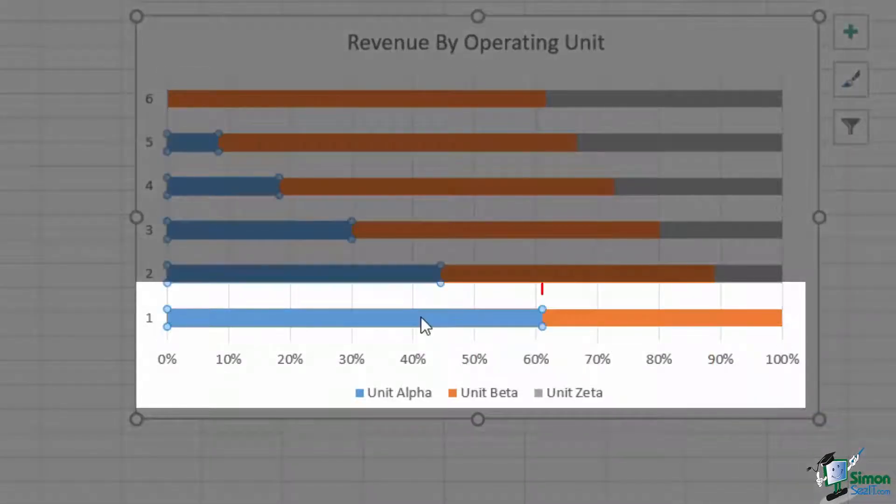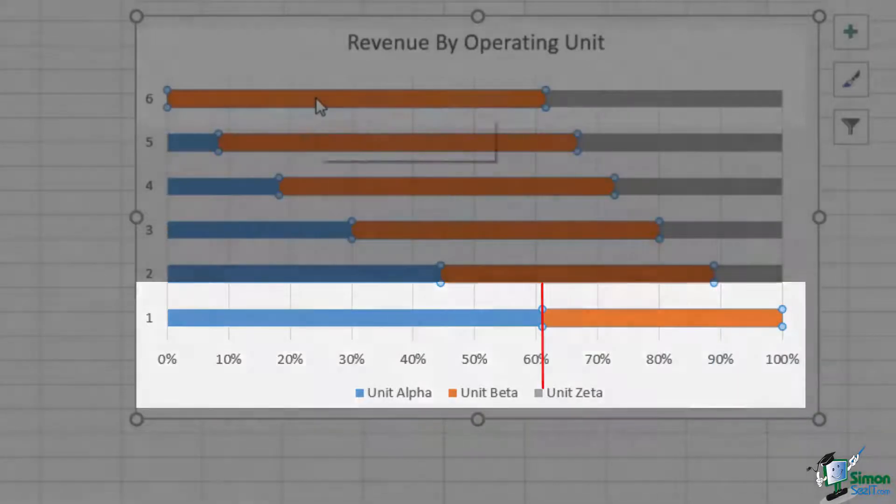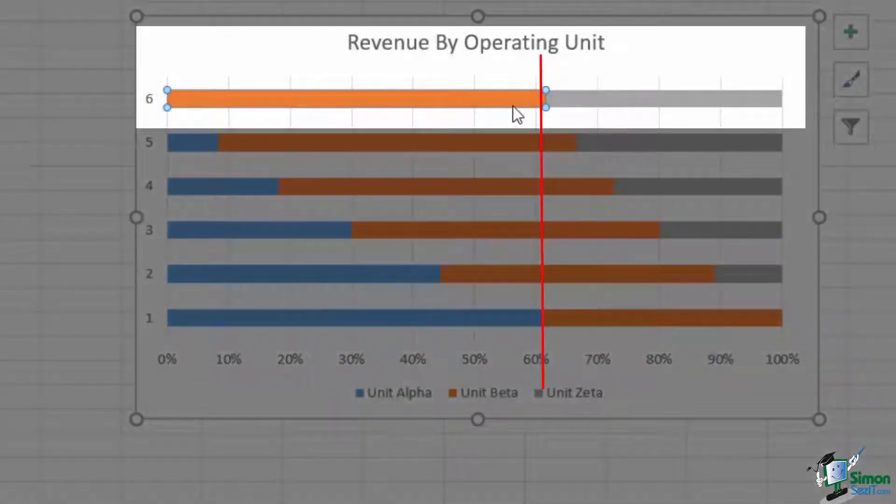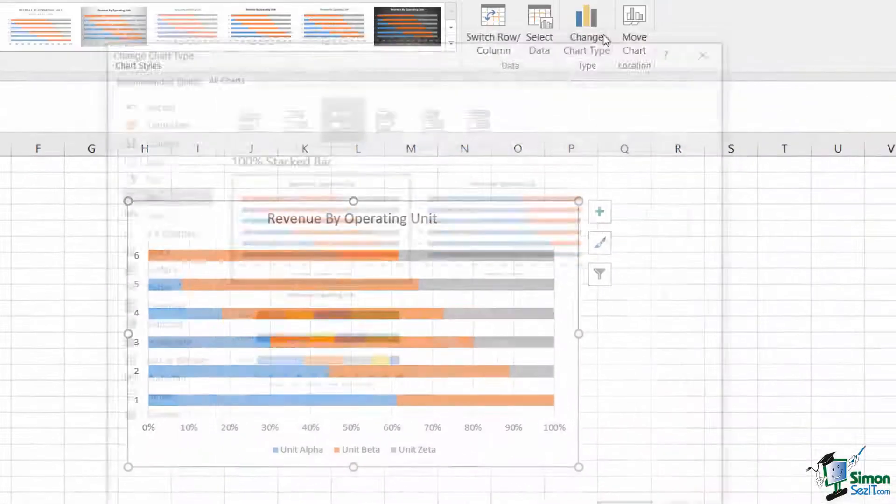If you look at the bottom row, you can see that alpha contributes just over 60% to year one with a revenue of 125, but beta contributes less than 50%. And then for year six, you can see that beta contributes over 60%, and zeta contributes less than 40%.